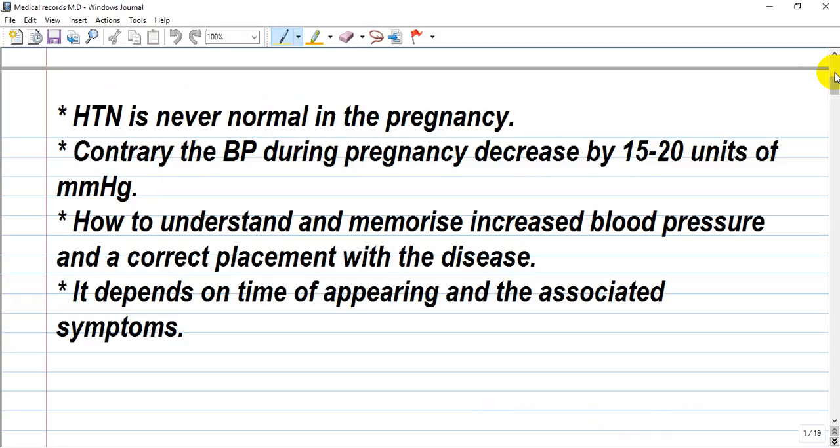Why does it decrease? Because circulating blood volume, especially plasma, increases like 1.5 or double, and peripheral vessel dilation occurs because of increasing flow to the fetus. How to understand and memorize increased blood pressure and correct placement with the disease depends on time of appearing and the associated symptoms.